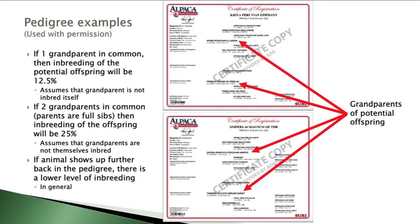By lining the pedigrees up this way, if you find animals that appear in both the top and bottom pedigree but they're further back than these potential grandparents, that would result in a lower level of inbreeding. However, as you add more animals that appear further back in the pedigree, the inbreeding of the potential offspring is of course increased.